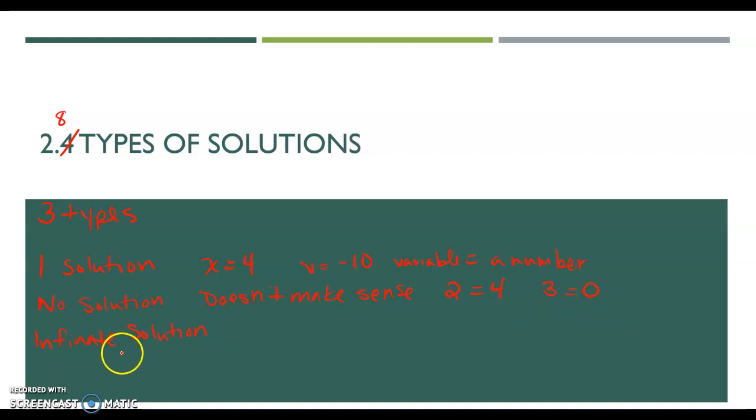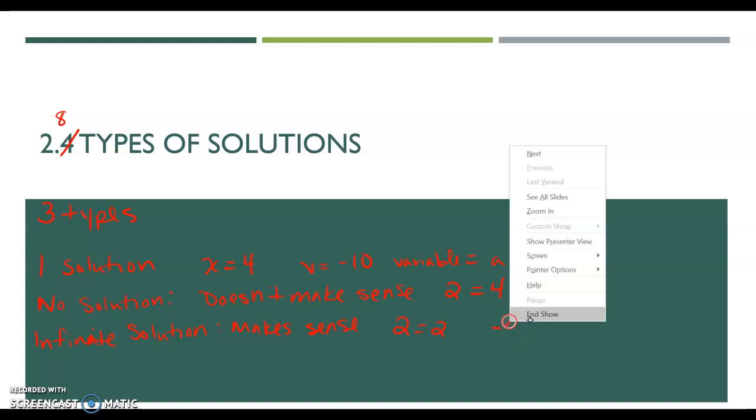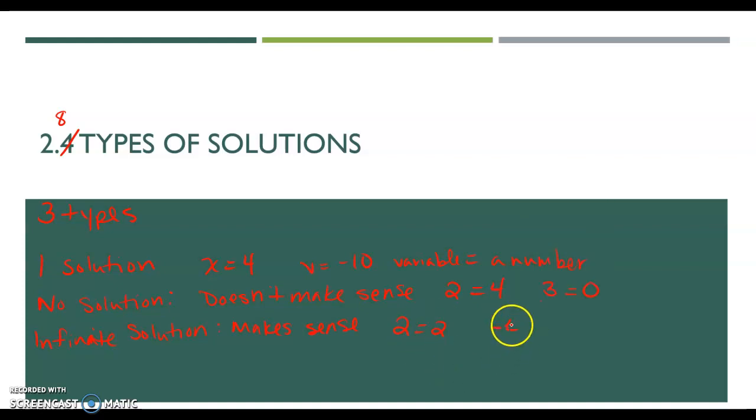And then infinite solutions or infinitely many solutions make sense. But again, doesn't have a variable. So that would be like 2 equals 2 or negative 4 equals negative 4 or 0 equals 0.